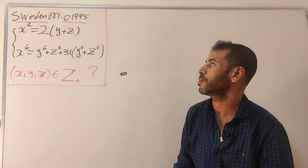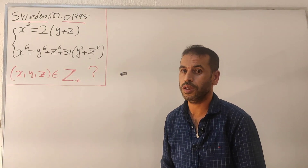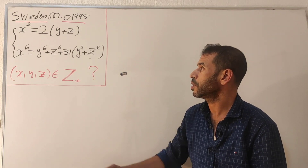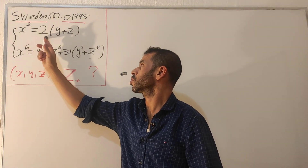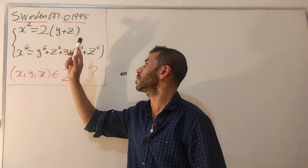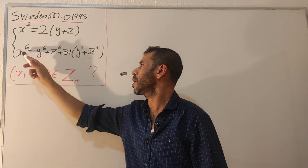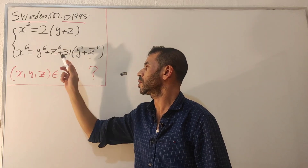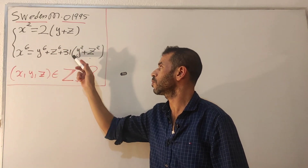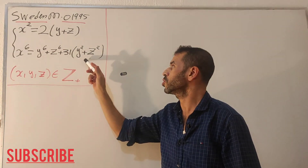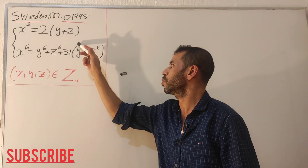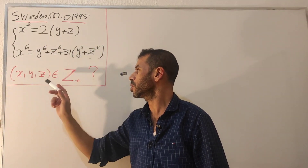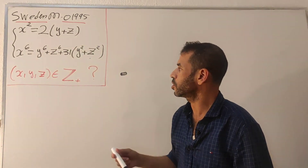Here is a nice problem from the Sweden Mathematics Olympiad, edition 1995. We have the following equation system: x squared equals twice y plus z, and x to the 6 equals y to the 6 plus z to the 6 plus 31 multiplied by the quantity y squared plus z squared. Our goal is to solve this system in positive integers.